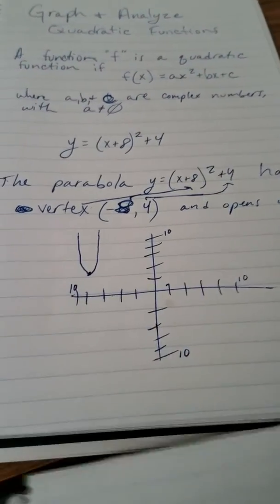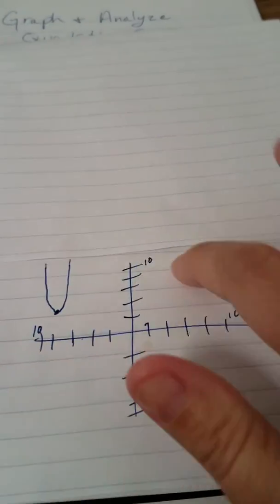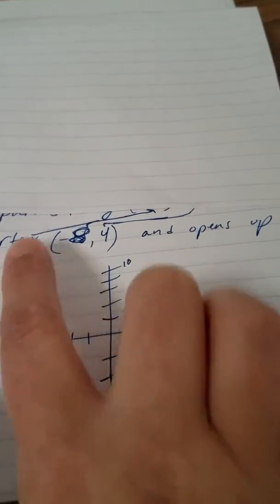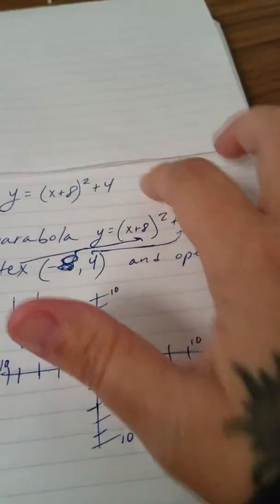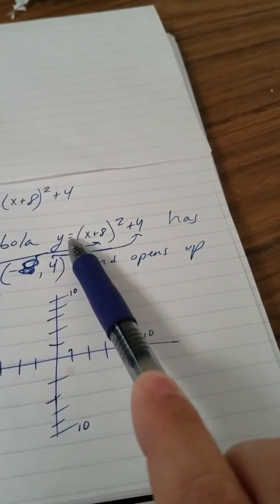But the graph of this is reflected here. And I found my point of the vertex at negative 8 and 4. And you see this opens up because a, the invisible 1 here, is greater than 0.